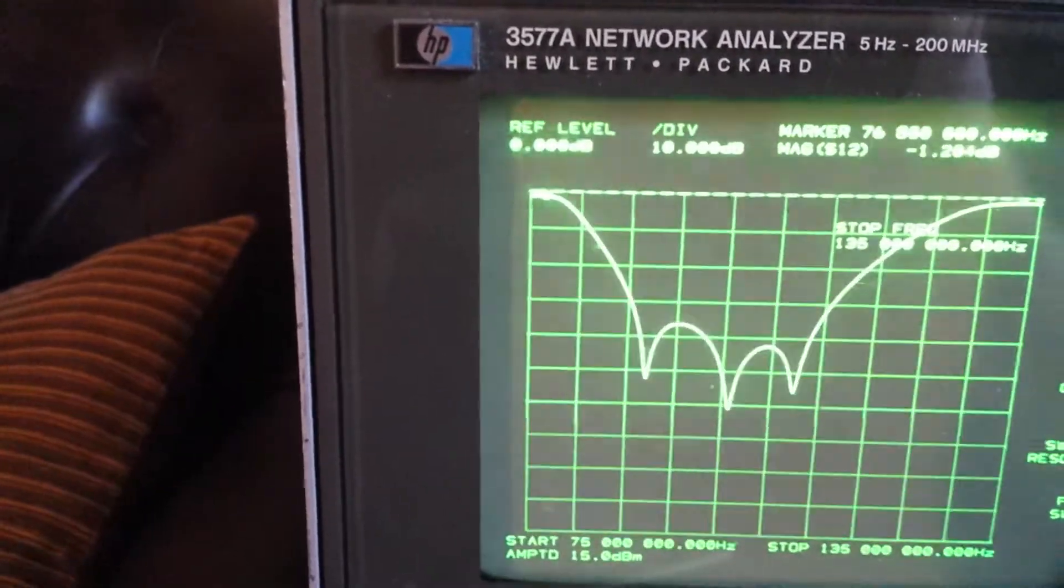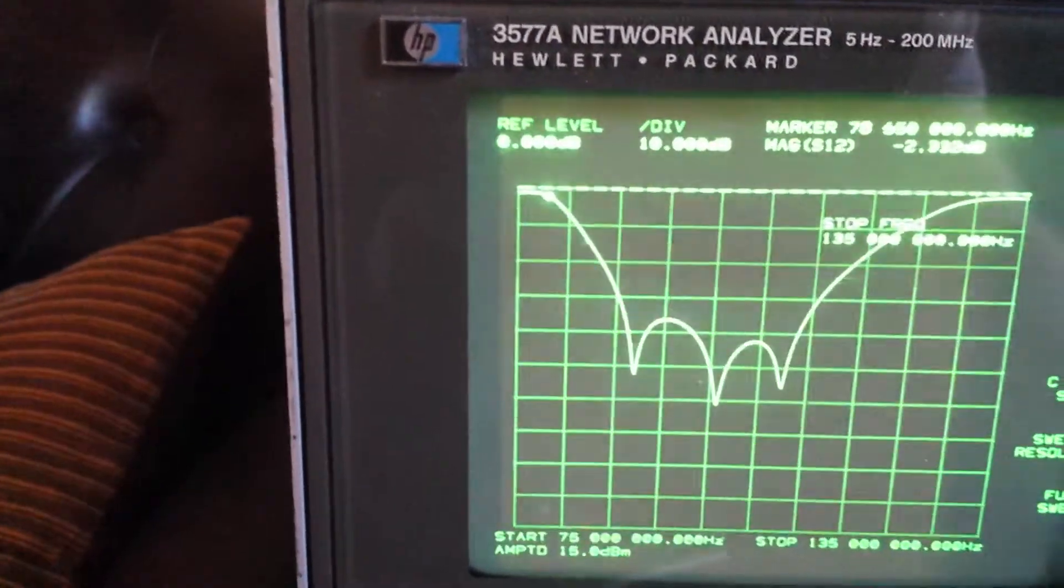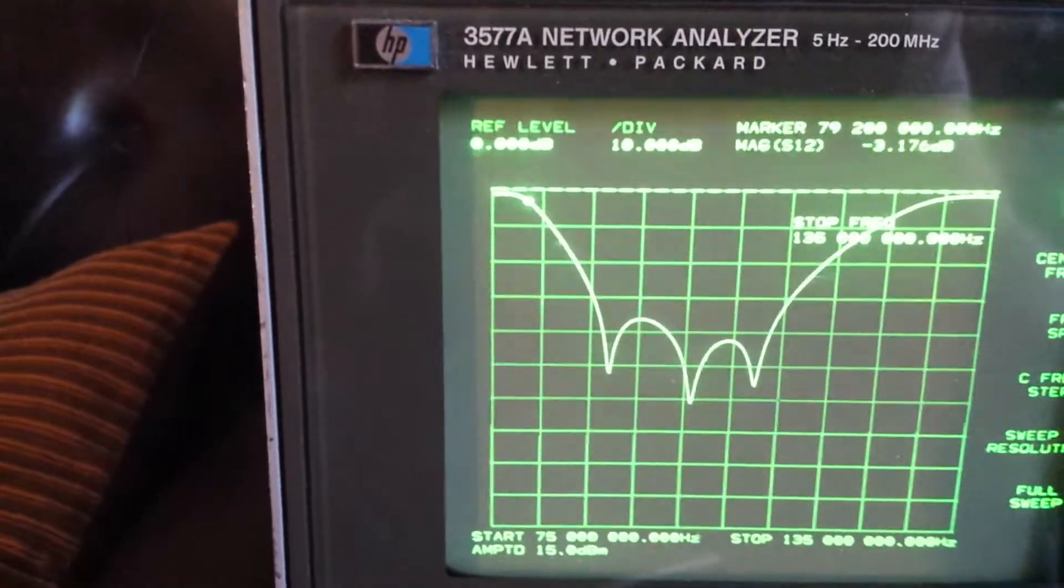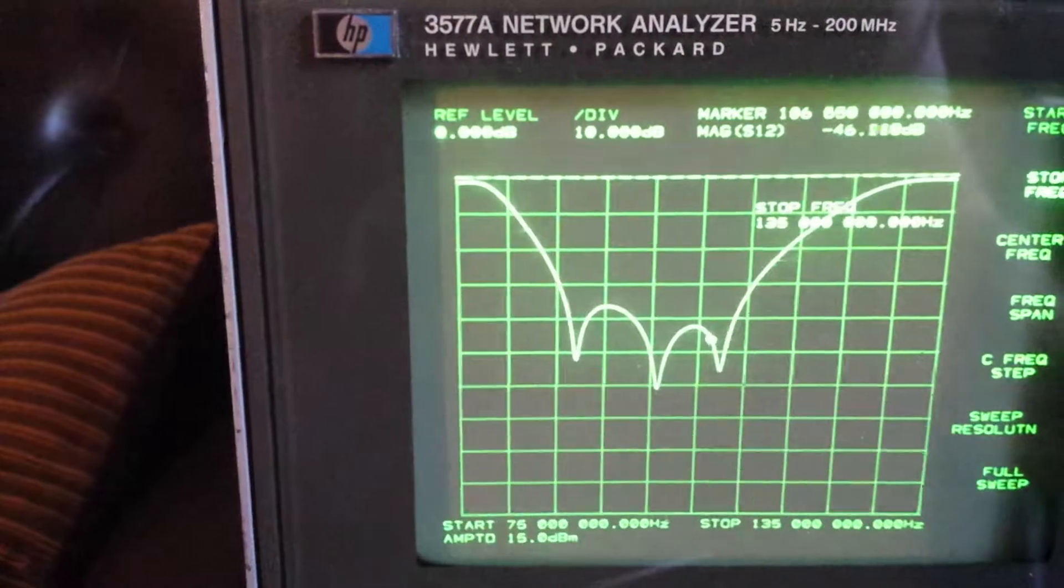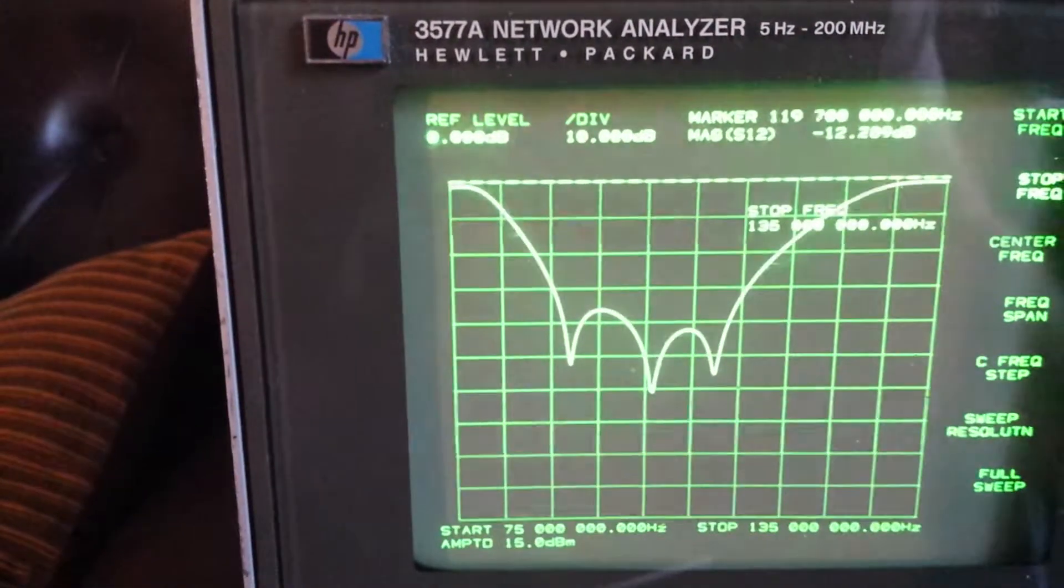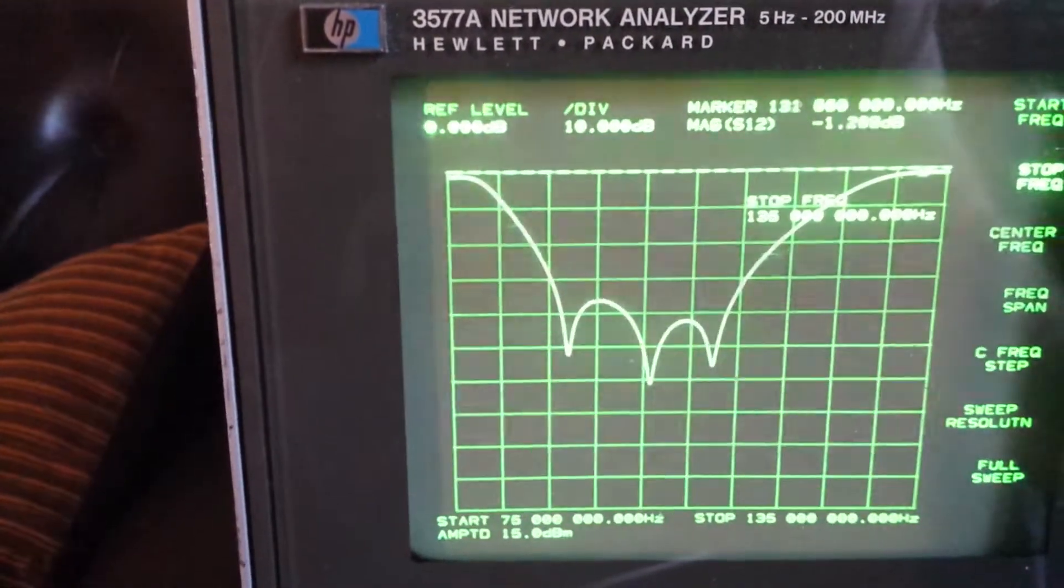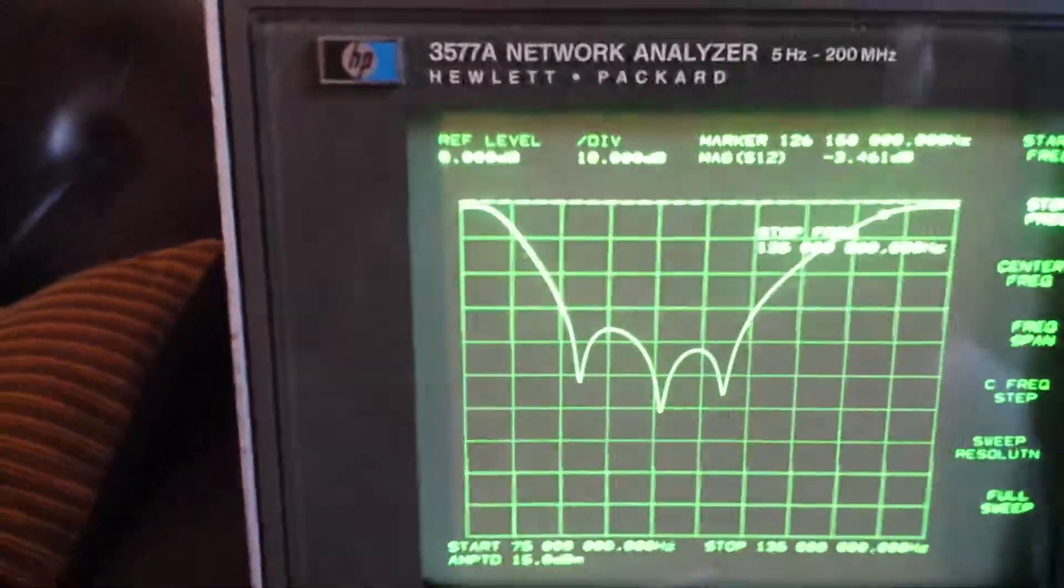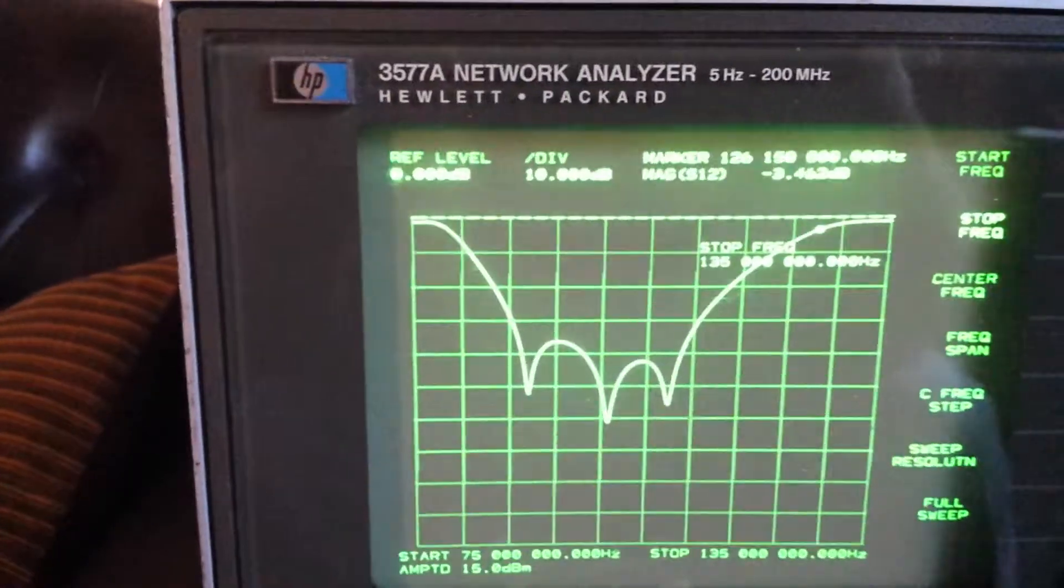The 3 dB roll off right around 79 MHz. And on this side, we get 3 dB down right around 150 MHz.